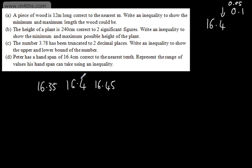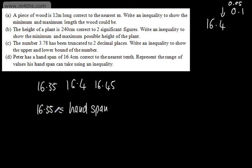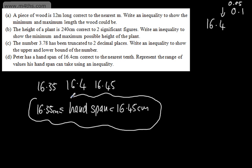So we can say the hand span is greater than or equal to 16.35 cm, yet strictly less than 16.45 cm, and that is an inequality to represent the range of values that his hand span can take. It can be anywhere in that particular interval.